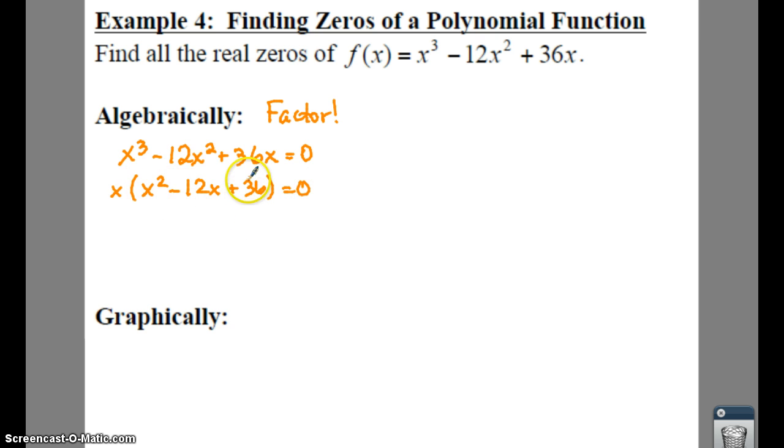So we should be able to factor this a little bit further. We need factors of 36 to add up to a negative 12. Well, that's going to be x minus 6 and x minus 6. So algebraically, if we set each of these equal to zero, we say x equals zero. x minus 6 equals zero. And x minus 6 equals zero.